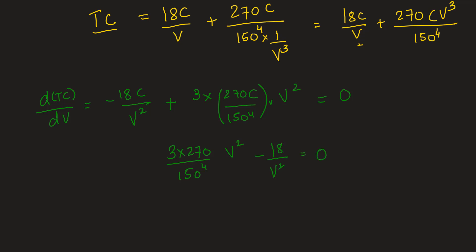Multiplying both sides with V^2, we have V^4 = 18×150^4/(3×270). So we get V = fourth root of [18×150^4/(3×270)]. This, when calculated on a calculator, gives the cutting speed as V = 57.91.